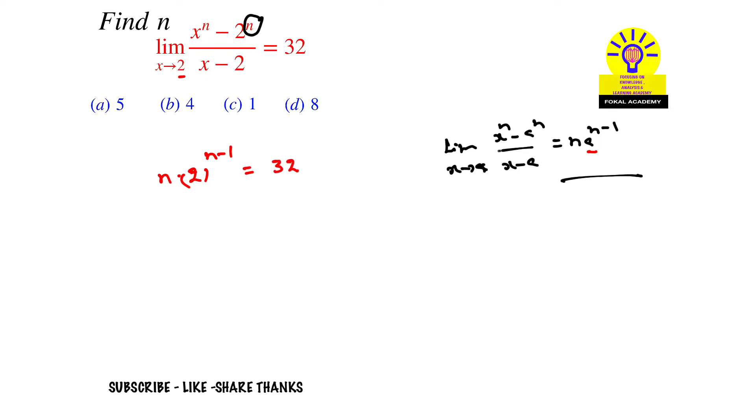Now 32 can be written as 4 × 8, and 8 can be written as 2³. That is, 4 × 2³ can be written as 4 × 2^(4-1).